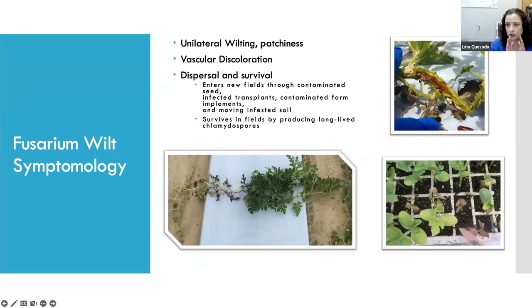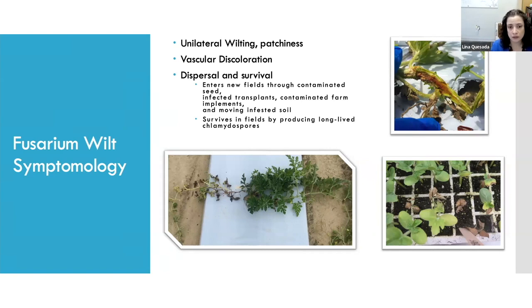You will also see vascular discoloration if you cut open the crown area of the stem. This disease typically enters your field via infected transplants — that's a really easy entry route — or infected seed. Since it's soil-borne, moving soils from an infected field to a clean field is risky, so if you have a fusarium field you may want to work that field last. It survives long-term by producing survival structures called chlamydospores.